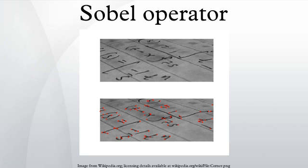More formally, since the intensity function of a digital image is only known at discrete points, derivatives of this function cannot be defined unless we assume that there is an underlying continuous intensity function which has been sampled at the image points.